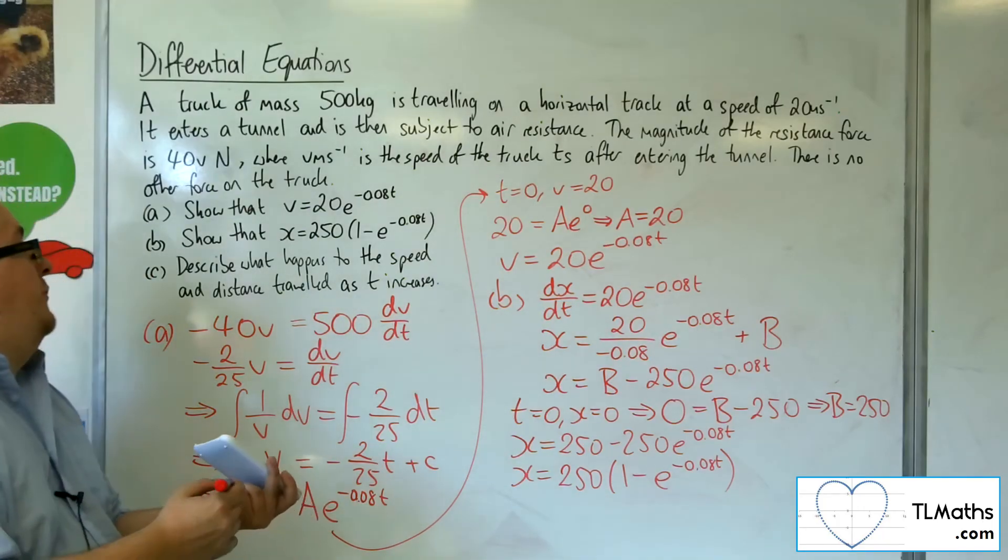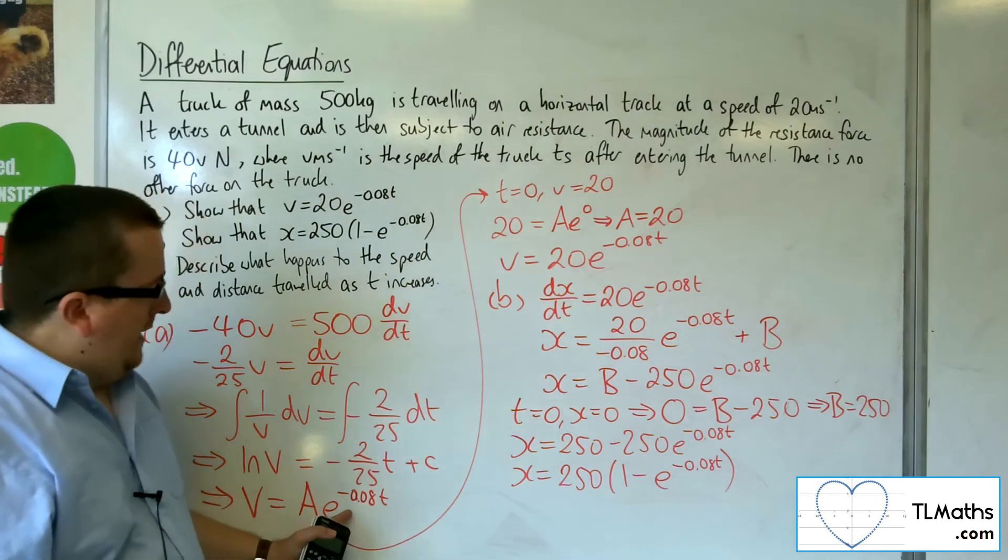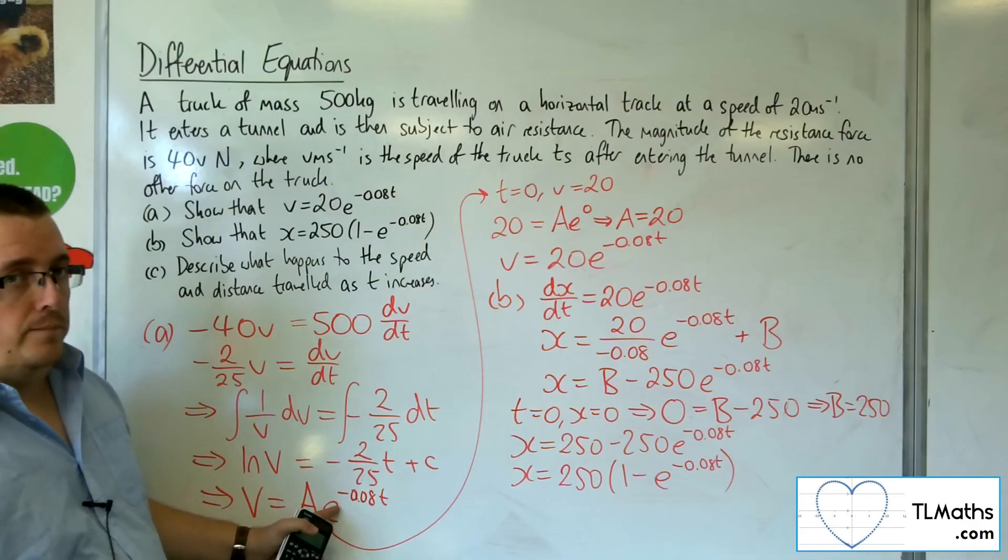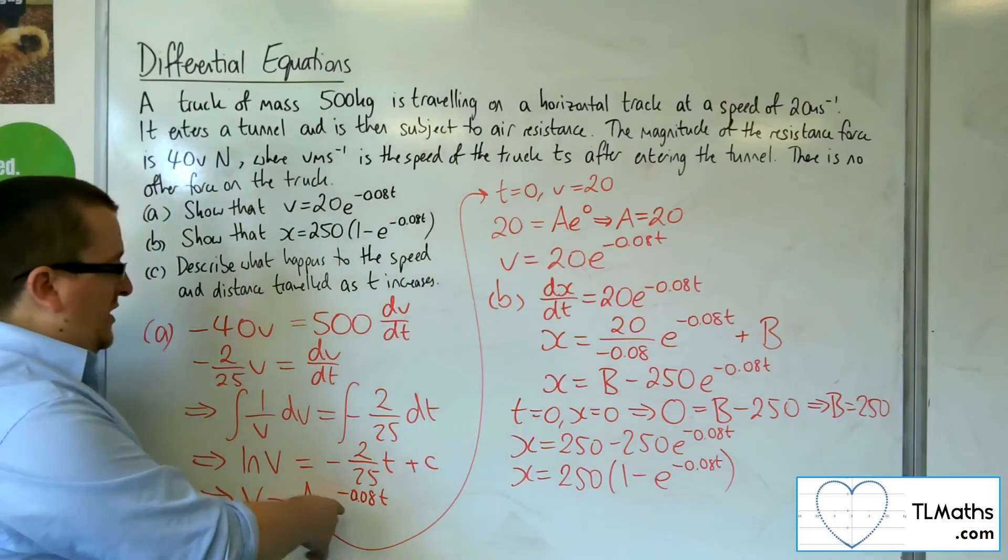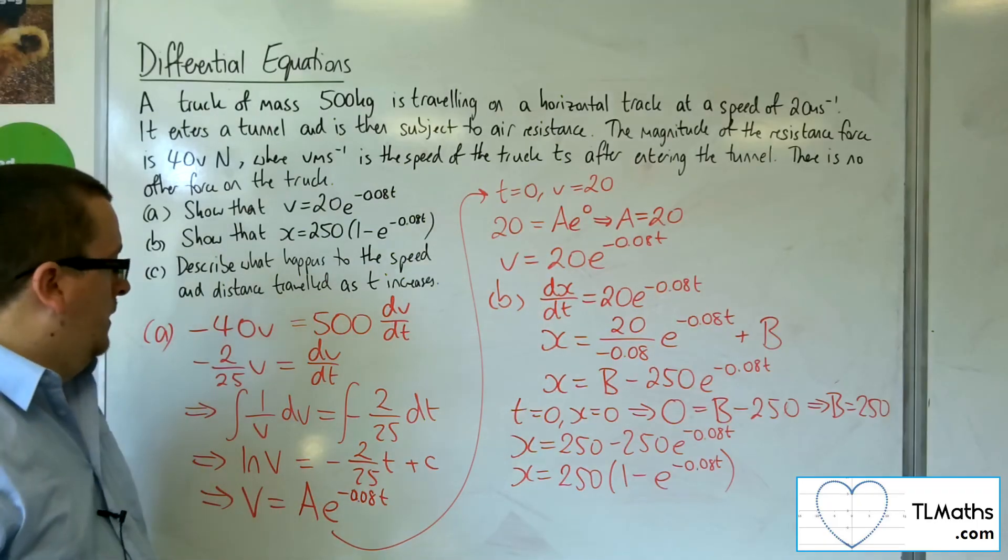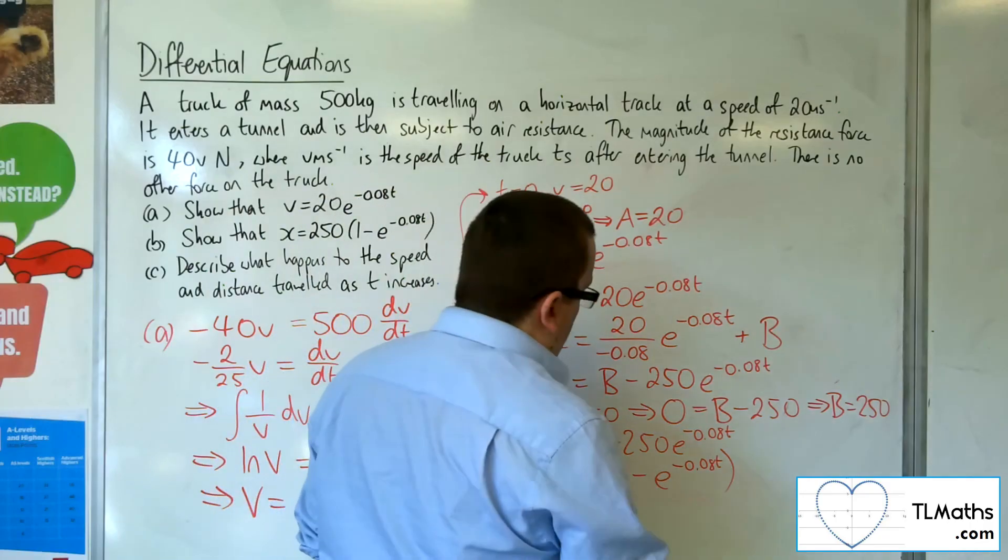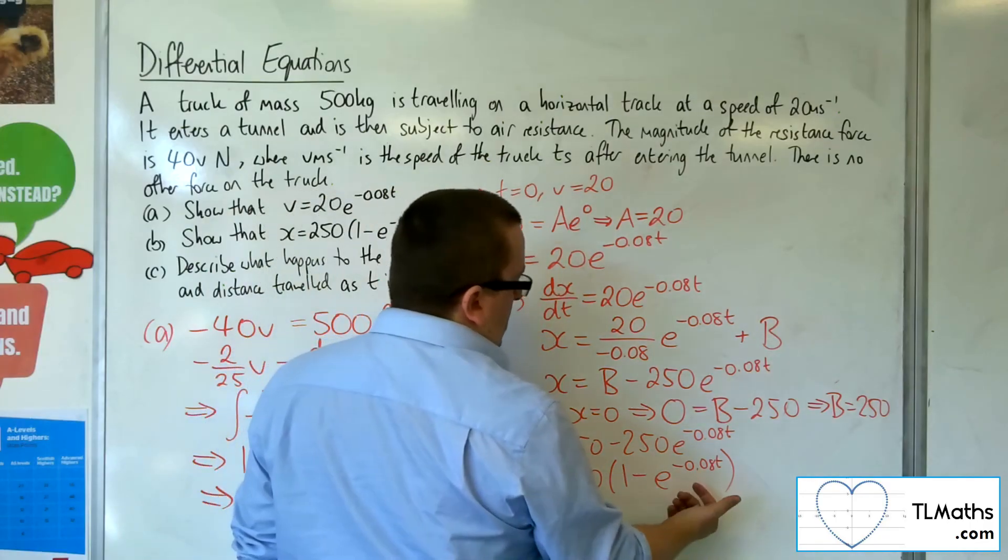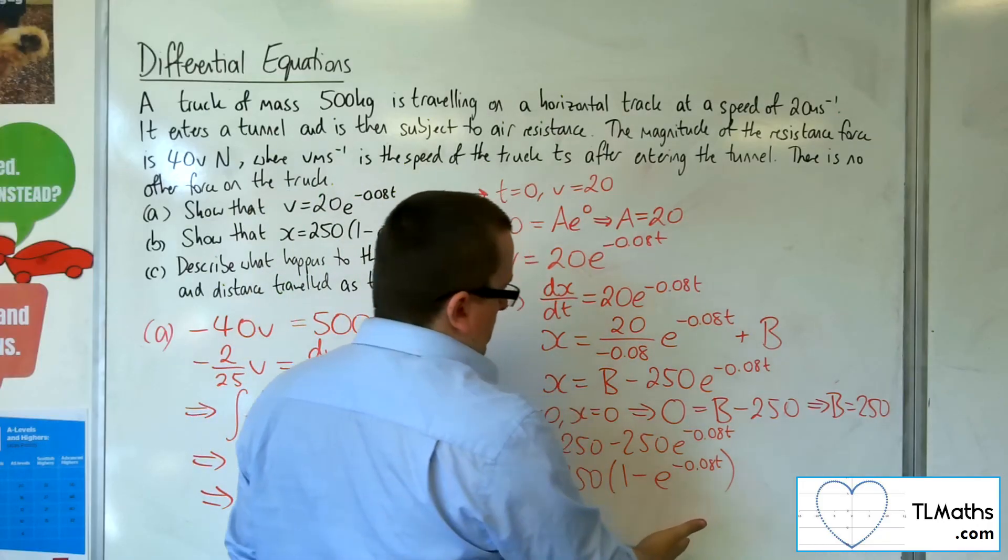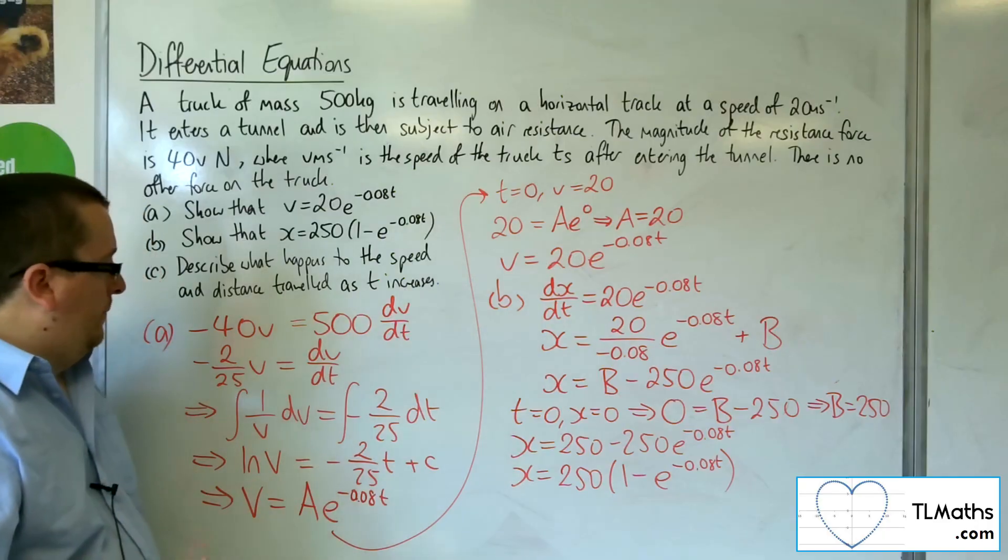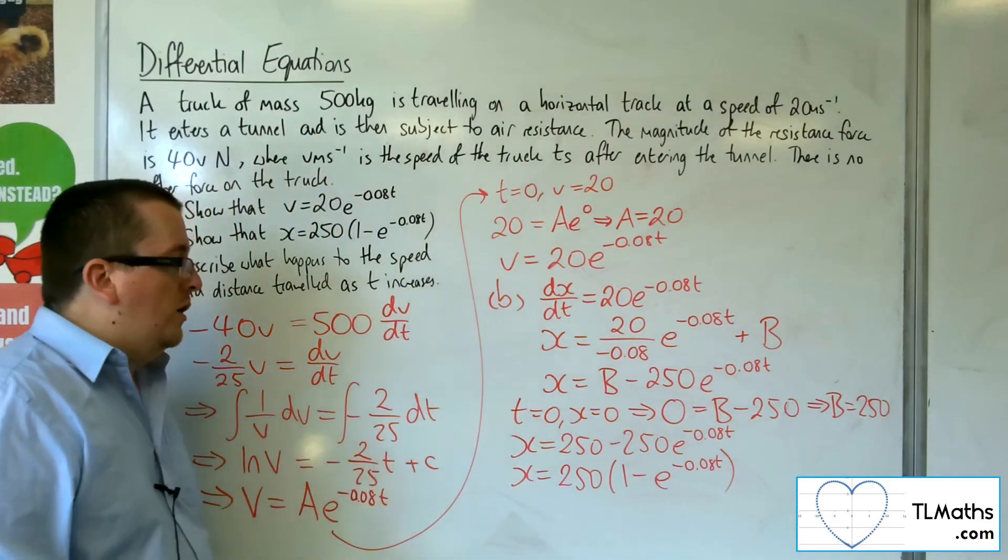To answer part C, describe what happens to the speed and distance traveled as T increases. Well, as T gets larger and larger, e to the minus 0.08T gets smaller and smaller. So actually you're getting A times something that's going towards 0. So that means as time increases, the velocity is decreasing towards 0. As for the displacement or distance in this case, as T increases, the e to the minus 0.08T decreases to 0. And so X will get closer and closer to 250 lots of 1. So as time increases, the truck is slowing down to rest and it's getting closer and closer to reaching 250 meters.